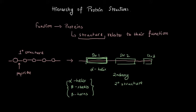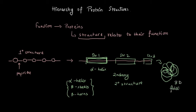When this locally folded structure of the polypeptide chain folds on itself to attain a three-dimensional conformation — folding in 3D space — this is called the tertiary structure, or third-degree structure.